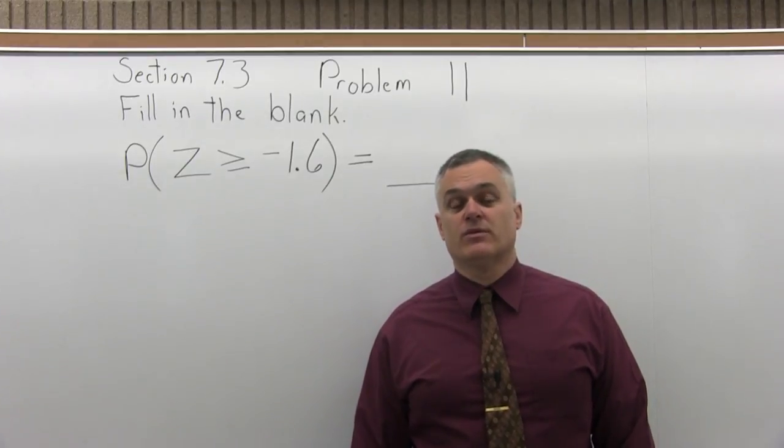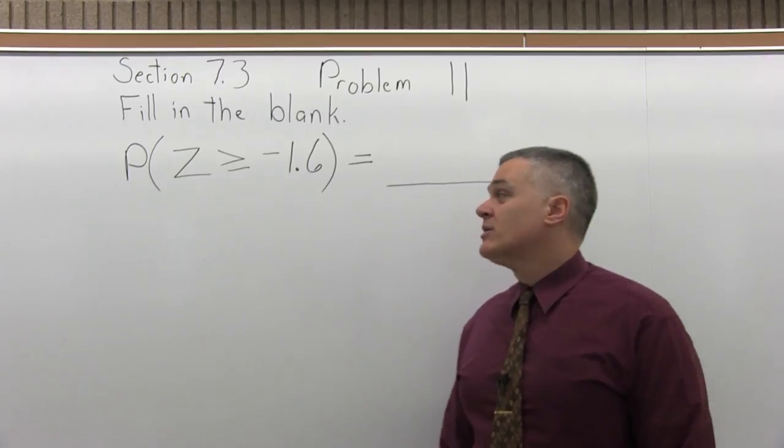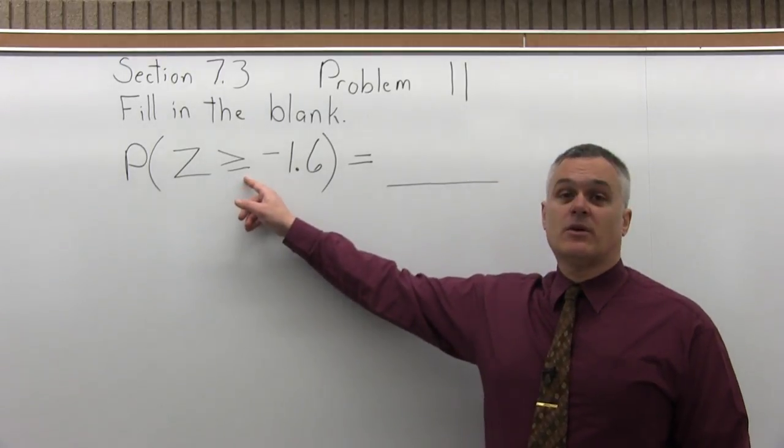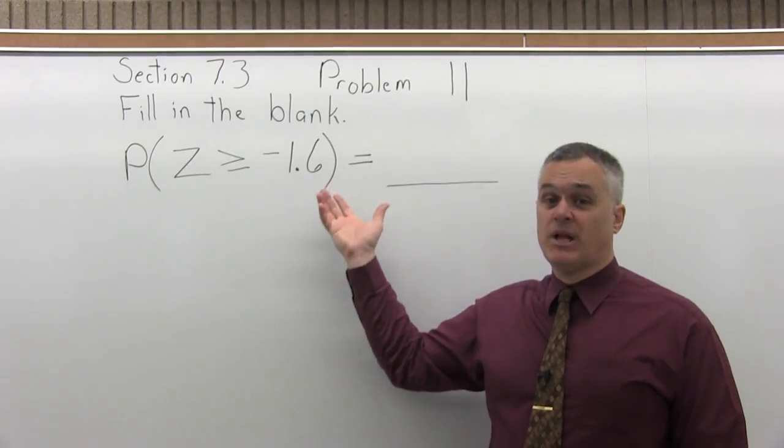This is Section 7.3, Problem number 11. It says fill in the blank. The probability that Z is greater than or equal to negative 1.6 equals blank.